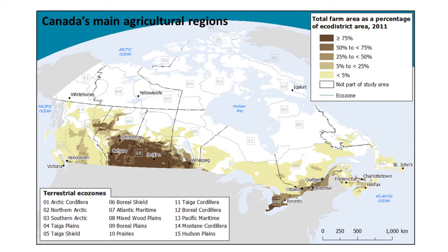This is a map produced by Statistics Canada that shows total farm area as a percentage of ecodistrict area in 2011. Areas with darker colors have a greater percentage of that land base classified as agricultural land, while areas that are white have no counted agriculture. This map gives us a pretty good idea of Canada's main agricultural regions — there are actually five of them.